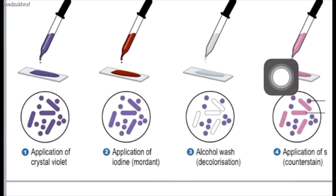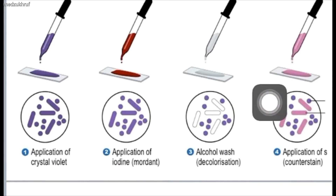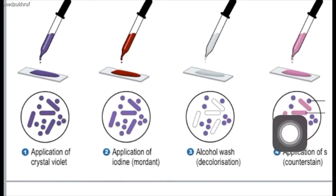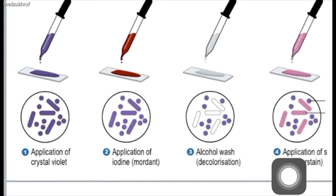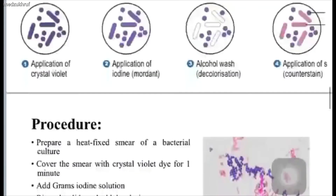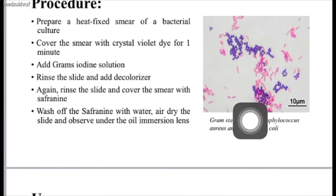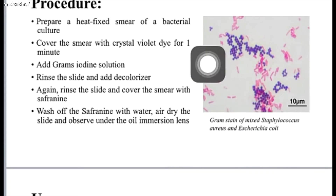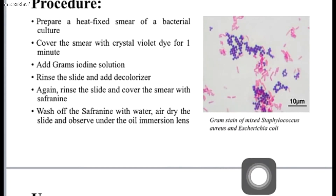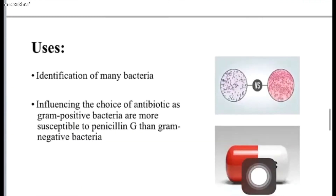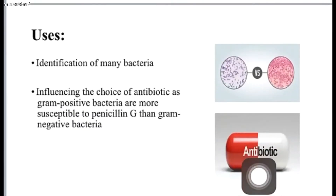Next, you add the counterstain — safranine — to colorize the gram negative bacteria pink or red. At the end, you can preview them under the microscope using the oil immersion lens, as shown here.